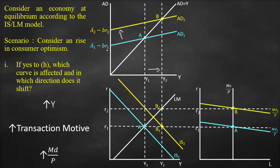The goods market is at equilibrium at point B, with intersection between aggregate demand and the output level. The money market is also at equilibrium at point B. However, the ISLM model is not yet at equilibrium because IS and LM are not intersecting at point B2.